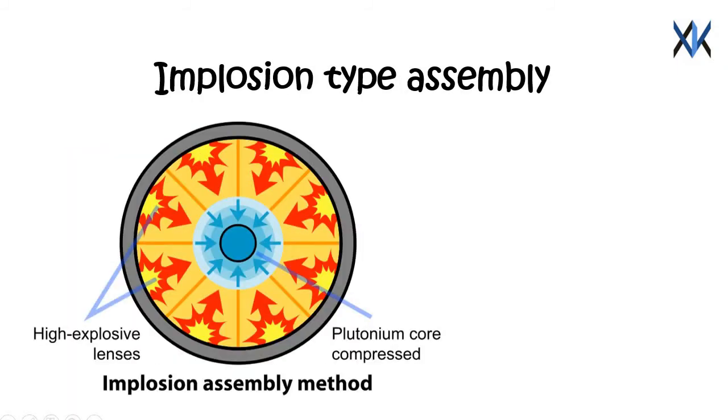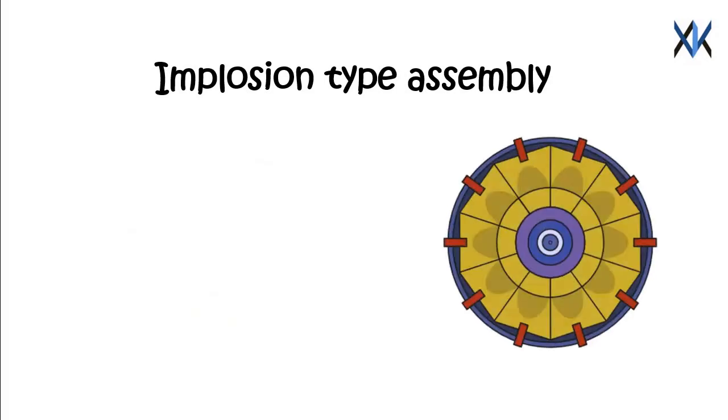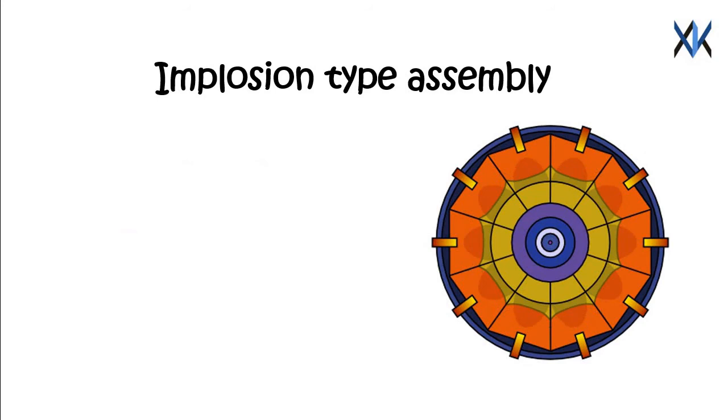Implosion type assembly consists of a neutron initiator at the center, followed by a plutonium core, covered by a tamper which is uranium-238 and then by explosives. The explosives are detonated by multiple exploding bridge wire detonators. This simultaneous detonation of the conventional explosives, which is placed uniformly around the pit, causes the plutonium to be squeezed, thus increasing its density resulting in fission.